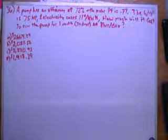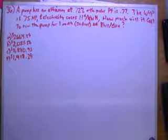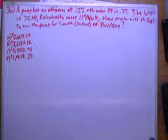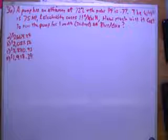If the water horsepower is 75 horsepower and electricity has a cost of 11 cents per kilowatt hour, how much will it cost to run the pump for one month assuming 30 days in a month at 8 hours per day?